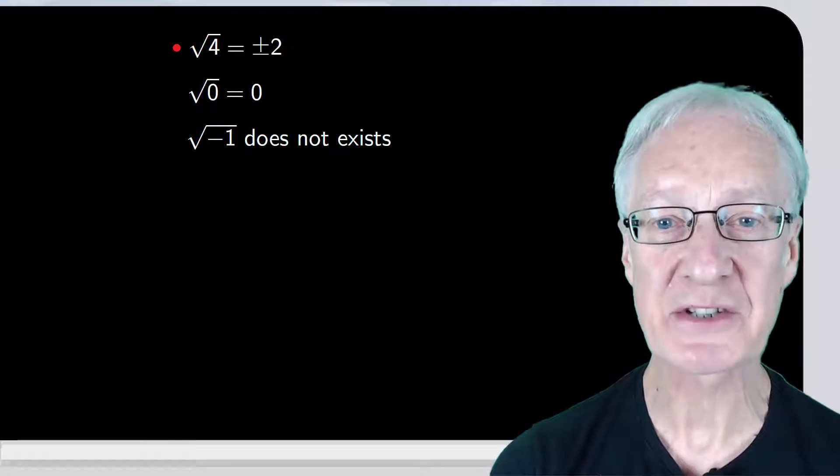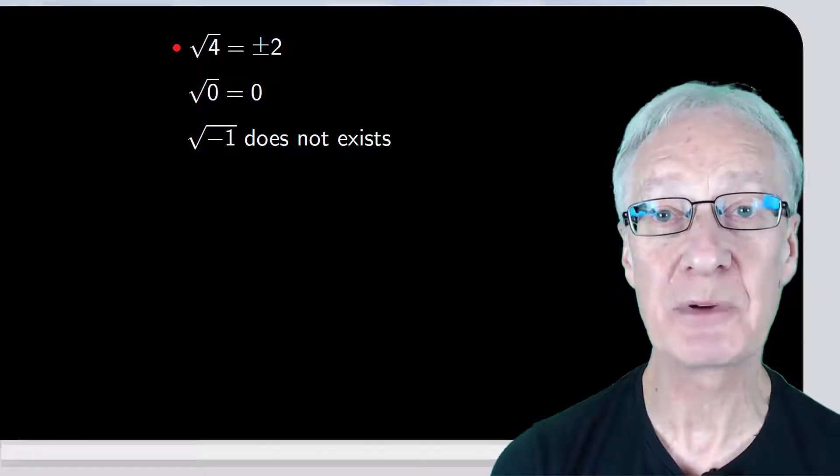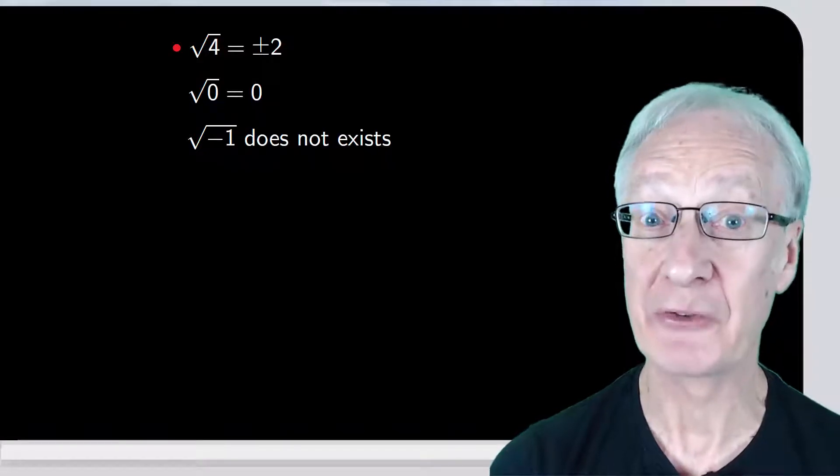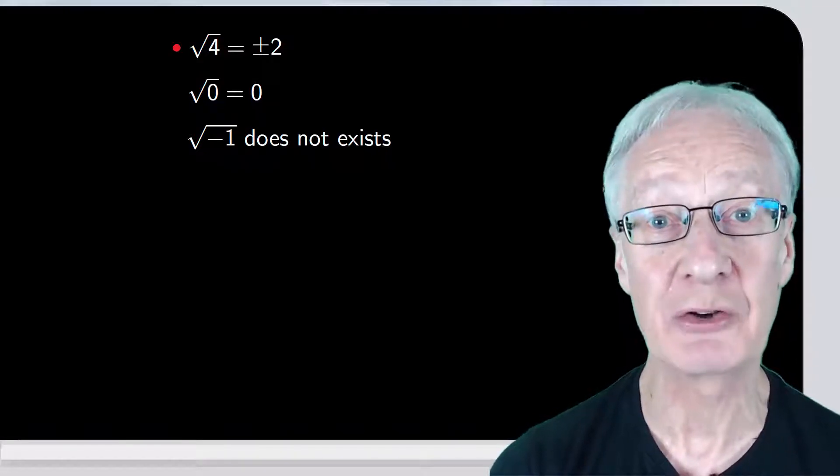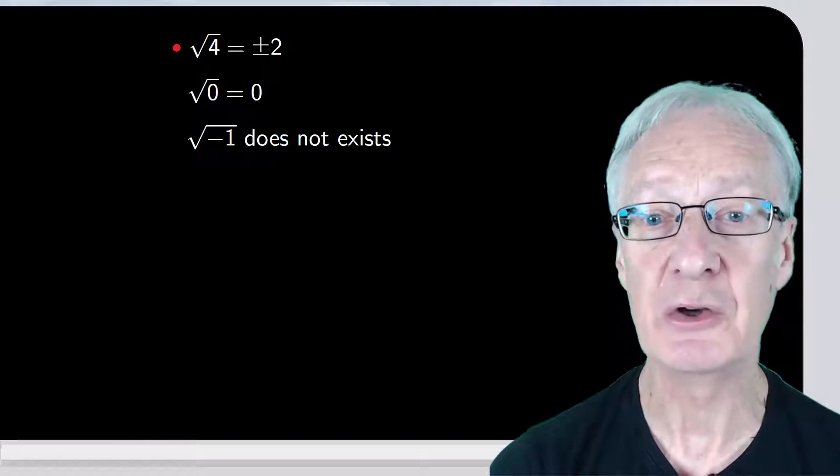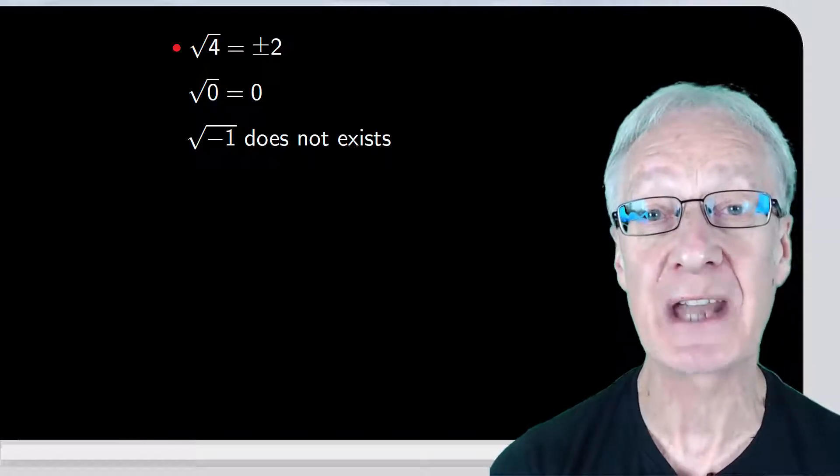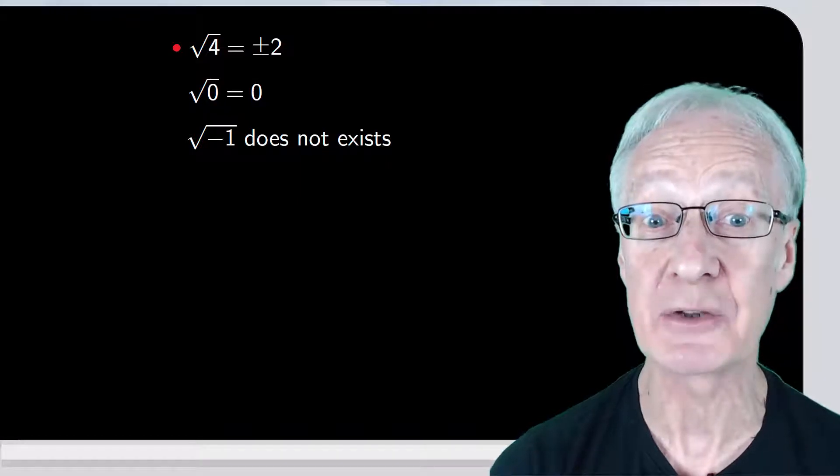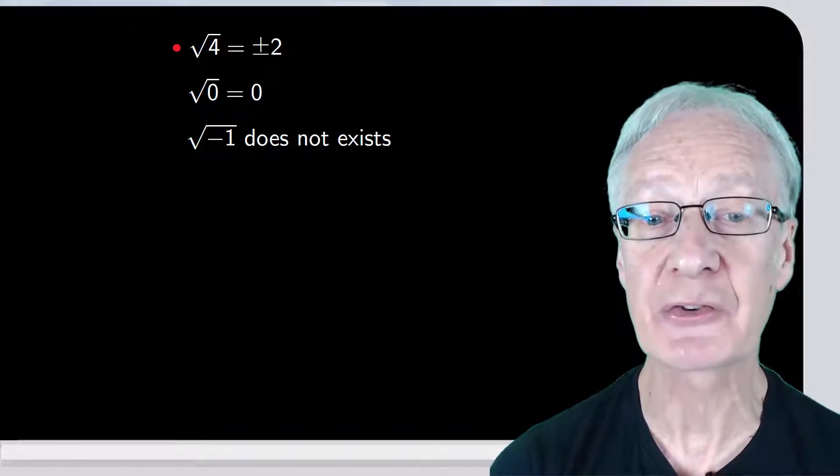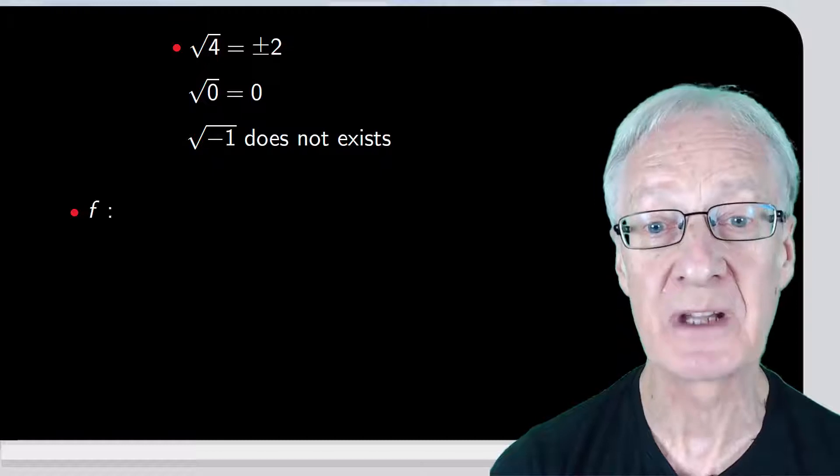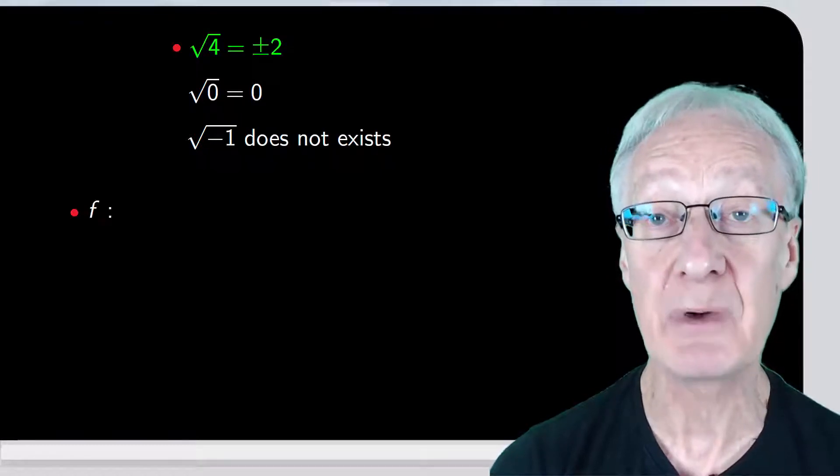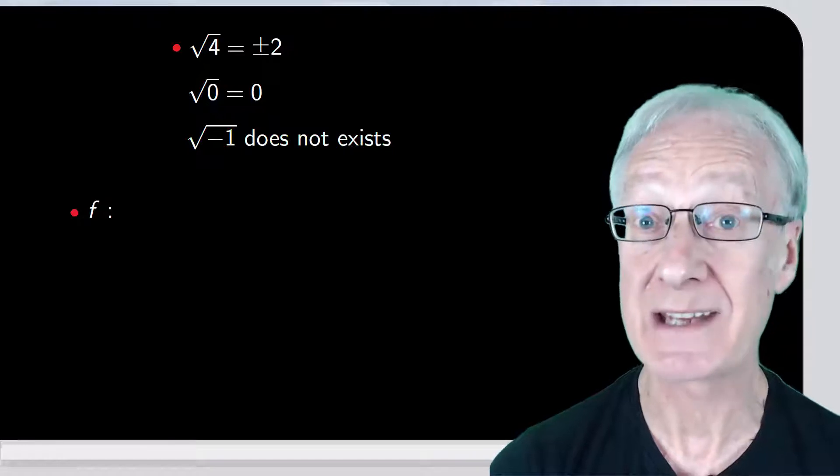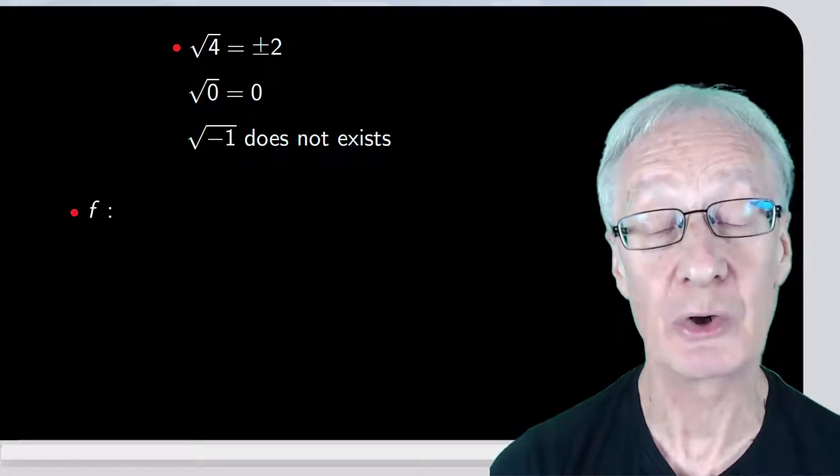Everything we've said so far refers to when we interpret the square root as a set. In mathematics, though, there are some very important objects which we call functions. You know from the definition of a function that every element has to have one and only one image. But if we try to see the square root as a function, some elements will have two images, and some will have none, which isn't how functions work. So, what can we do?